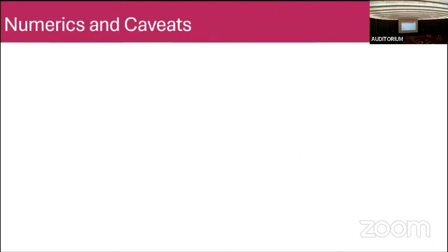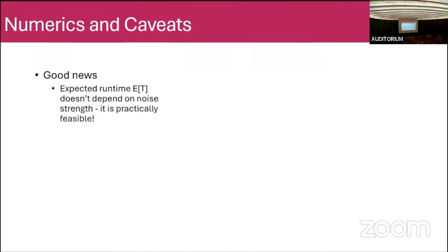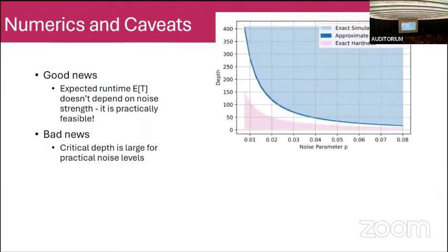How does this algorithm work in practice? The good news is the expected runtime doesn't depend on noise strength — no exponential in inverse noise strength as seen in other algorithms. The bad news is the critical depth threshold is actually very high. For example, with T-gates, controlled phase gates, and 1% dephasing noise (strength 0.01), you get classical simulation at depth about 300. For an experimentalist this might seem expected, but the result shows this holds regardless of the number of qubits — whether you have 1,000, a million, or a billion qubits, you cannot encode enough redundancy to escape that depth-300 threshold at 1% noise strength.